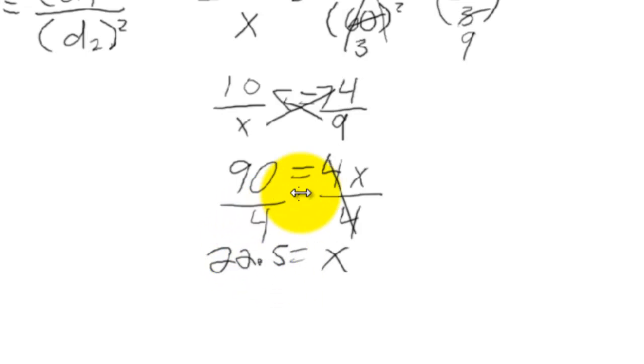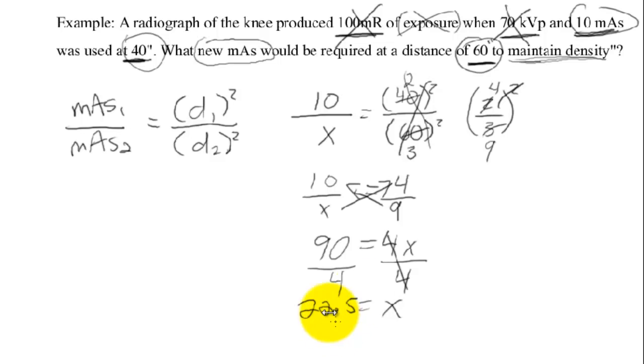After an hour of doing these as a student, your brain kind of wanders, you lose concentration. You just start writing numbers down and you don't really think about it. So it's always good to use the calculator just to check. They are allowed on the registry. A simple four-function calculator will do. Anyway, so 22.5, let's round that to the nearest whole number. So we're going to call it 23 mAs. That is our answer.